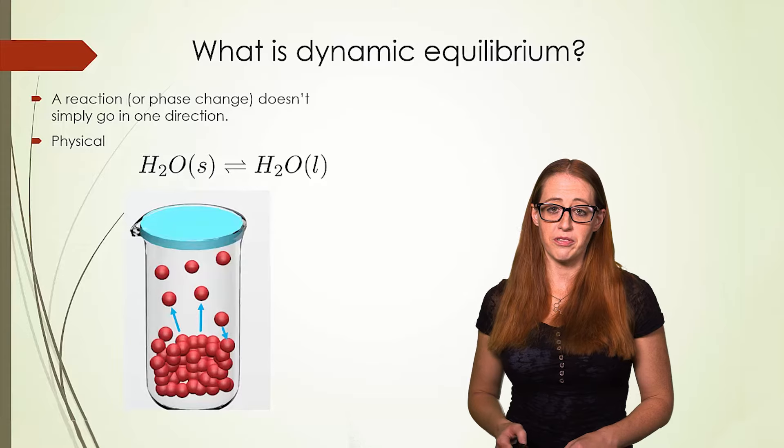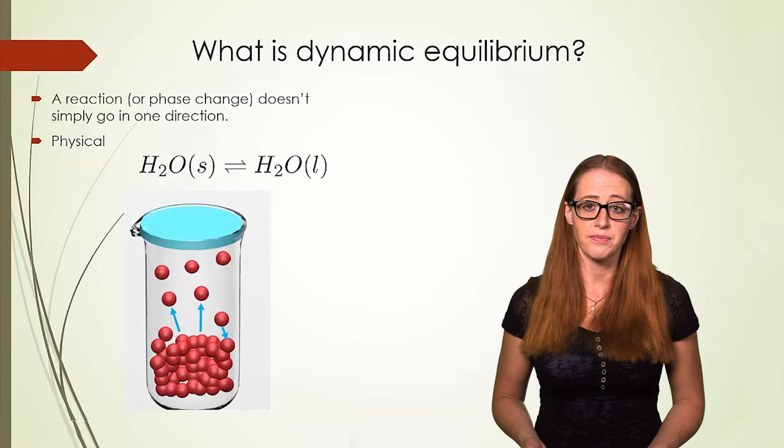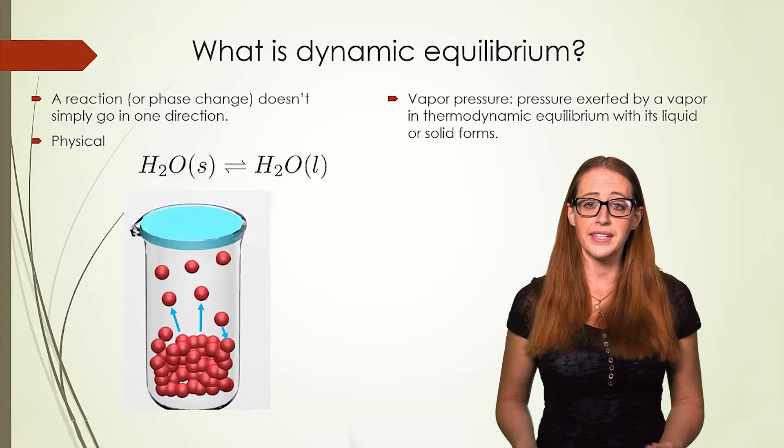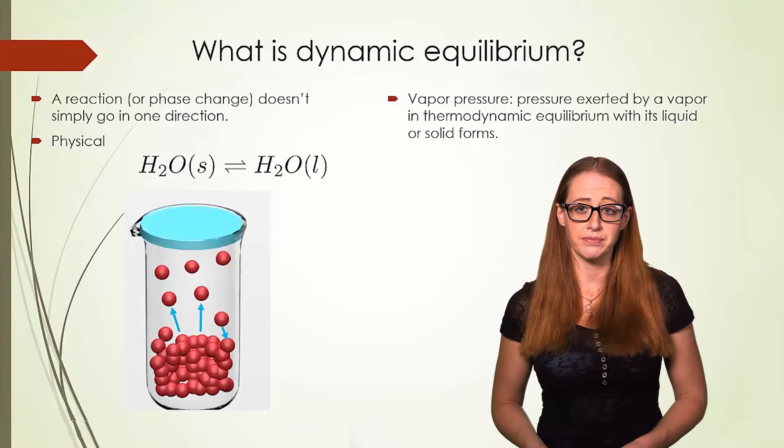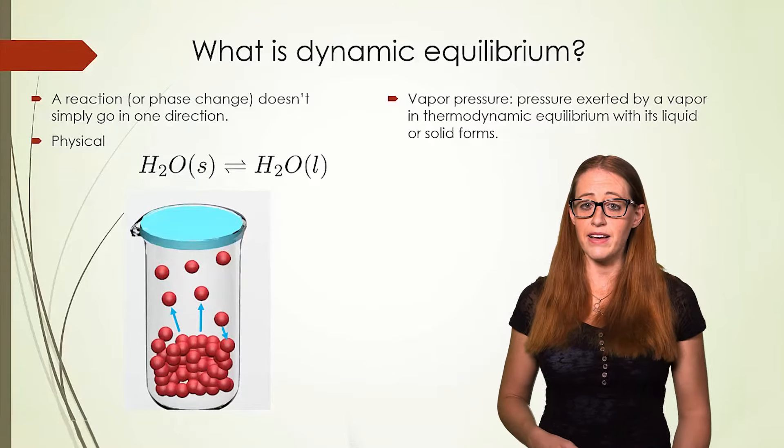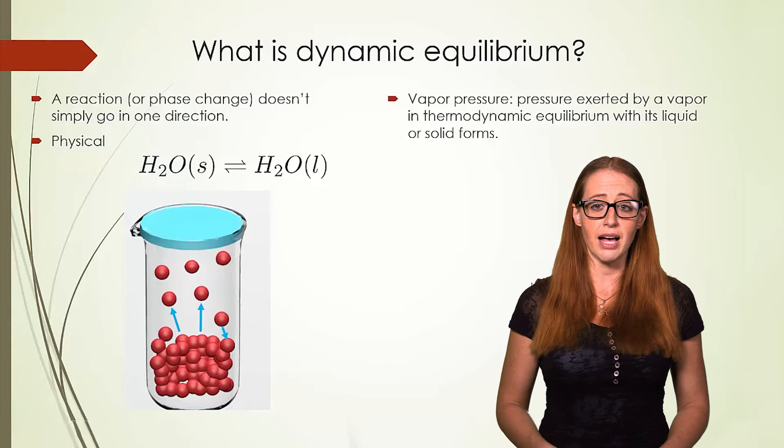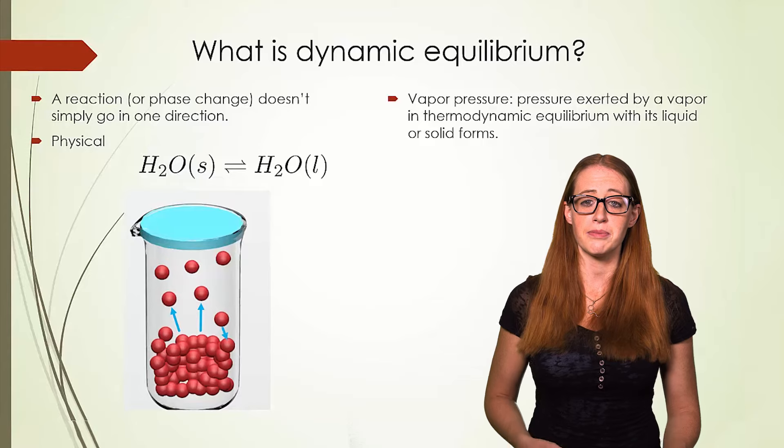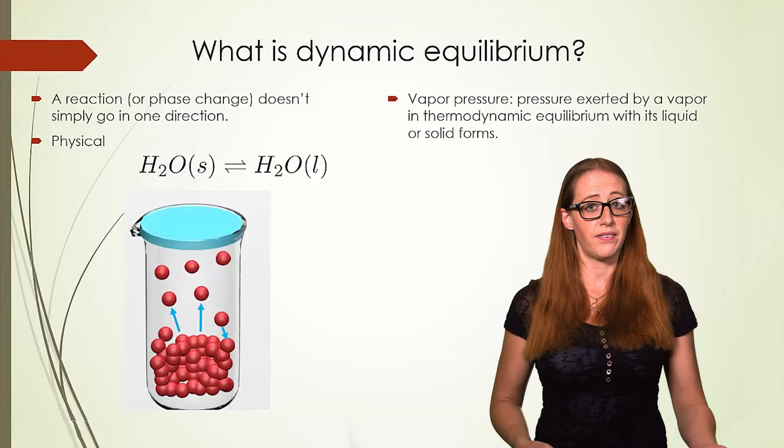The same is true with both physical and chemical processes. If the rate of the forward and the reverse process are the same, then it is in a dynamic equilibrium. If you have a sealed vessel, eventually the pressure in the top portion will stabilize. When this happens, a dynamic equilibrium has been reached, and this is called the vapor pressure.